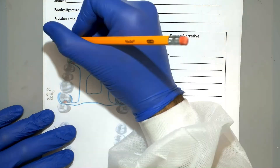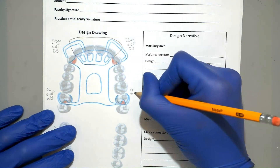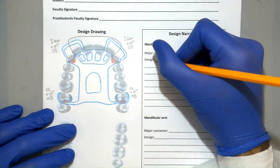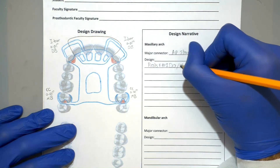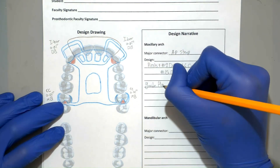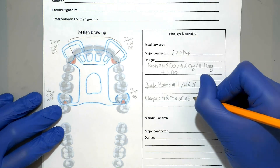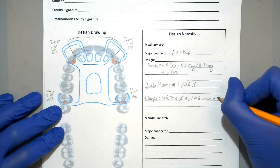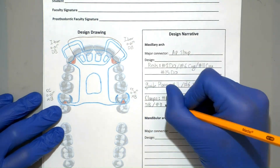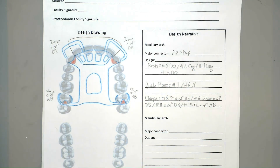We're almost done with the drawing. The only thing left is to write up some information about each clasp next to its drawing, including the type of major connector, the rests, guide planes, as well as clasps.